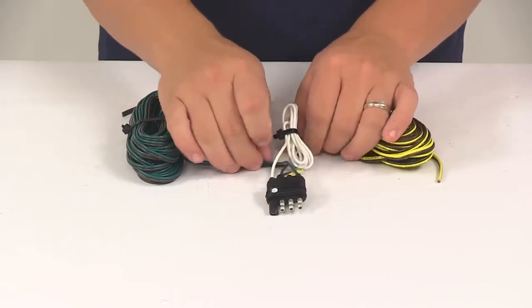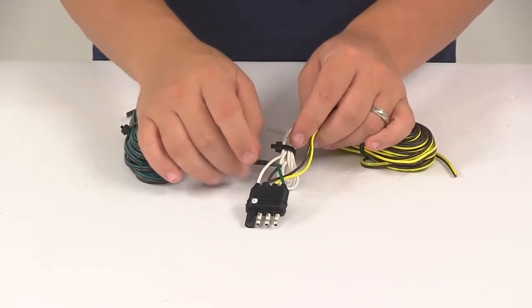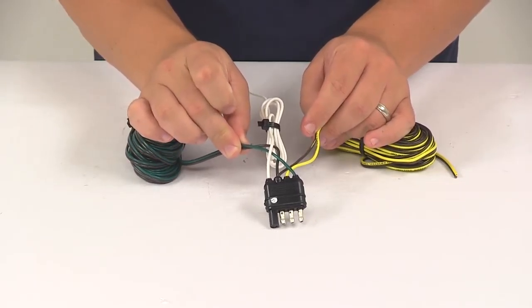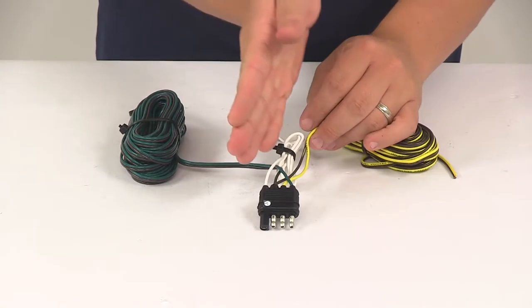Now this is a wishbone design so you can see right out of the housing of the plug we have a green and brown wire that's together and we have a yellow and brown wire that runs together. It creates that Y.